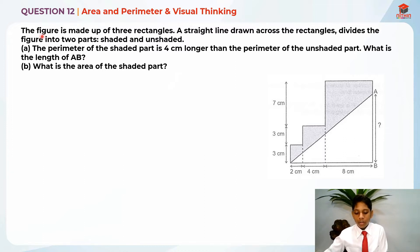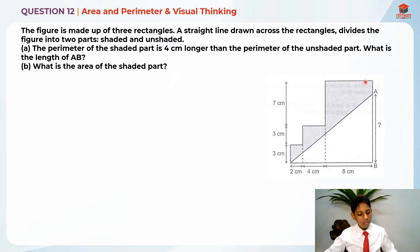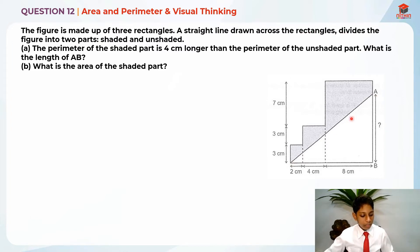The figure is made up of three rectangles — this one over here, this one over here, and this last one over here. A straight line is drawn across the rectangles, dividing the figure into two parts: shaded and unshaded.